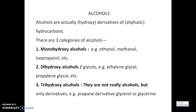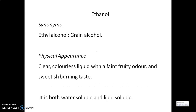Let us see in general about the types of alcohol. Alcohol derivatives are hydrocarbon derivatives. There are three categories: monohydroxy alcohol, dihydroxy alcohol, and trihydroxy alcohol. Monohydroxy alcohol examples include ethanol, methanol, and isopropanol. Dihydroxy alcohol examples include propylene glycol, and trihydroxy alcohol includes glycerol. These are not really alcohols but only derivatives.